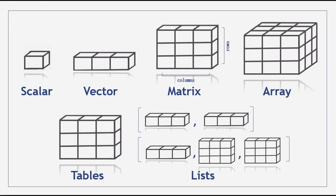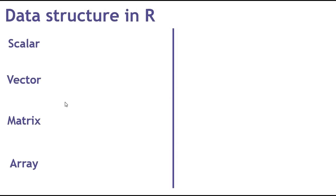Scalars are a one-dimensional data type that has only one element. Vectors are a one-dimensional data type which has more than one element. A matrix is a two-dimensional data type, and an array is a multi-dimensional data type. We also have tables and lists. Now you have an idea about data structures in R.